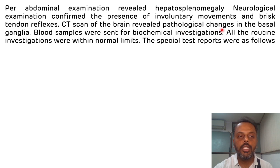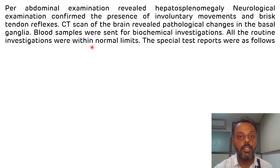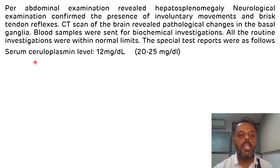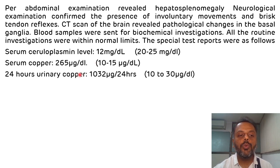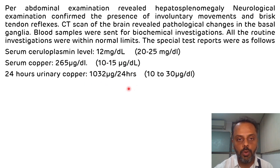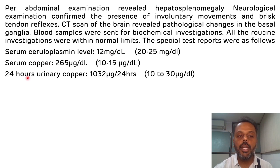Neurological examination confirmed involuntary movements and brisk tendon reflexes. Brain scan revealed pathological changes in the basal ganglia. Special lab reports were as follows: serum ceruloplasmin level was 12 mg/dL, serum copper was 265 micrograms/dL, and 24-hour urinary copper was 1032 micrograms per 24 hours. Serum ceruloplasmin was reduced, while serum copper and 24-hour urinary copper were increased.